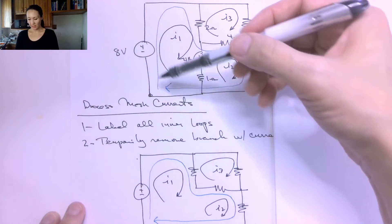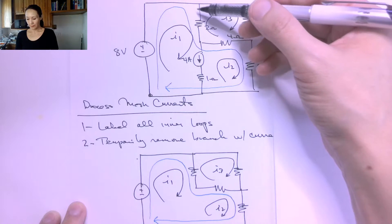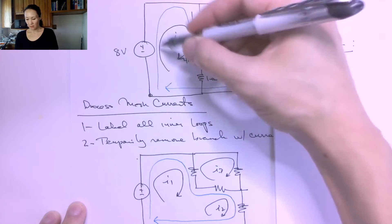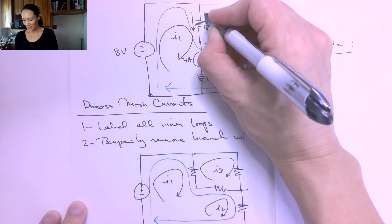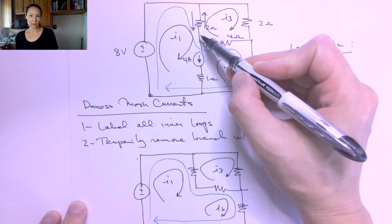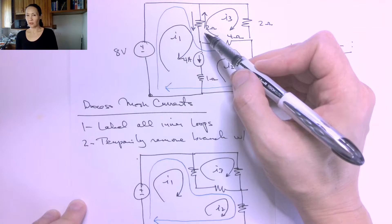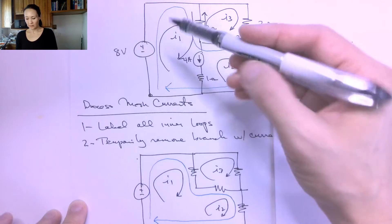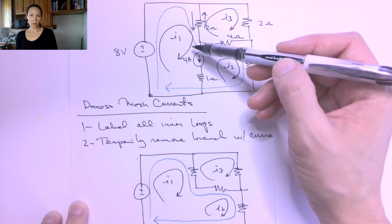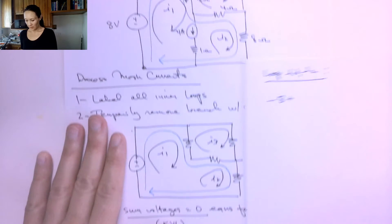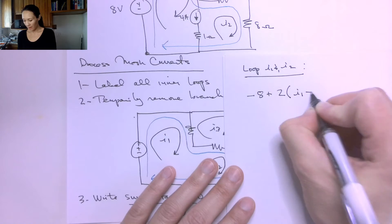The next thing we encounter as we come around this blue loop is this 2-ohm resistor. On the left side, I1 is coming through going in the downward direction, and on the right side, I3 is also touching this resistor. Since they're going in opposite directions, these currents are going to mesh and subtract. Since we're walking in the direction of the I1 loop, I1 is our positive current — so the equation term is 2 ohms times (I1 minus I3).